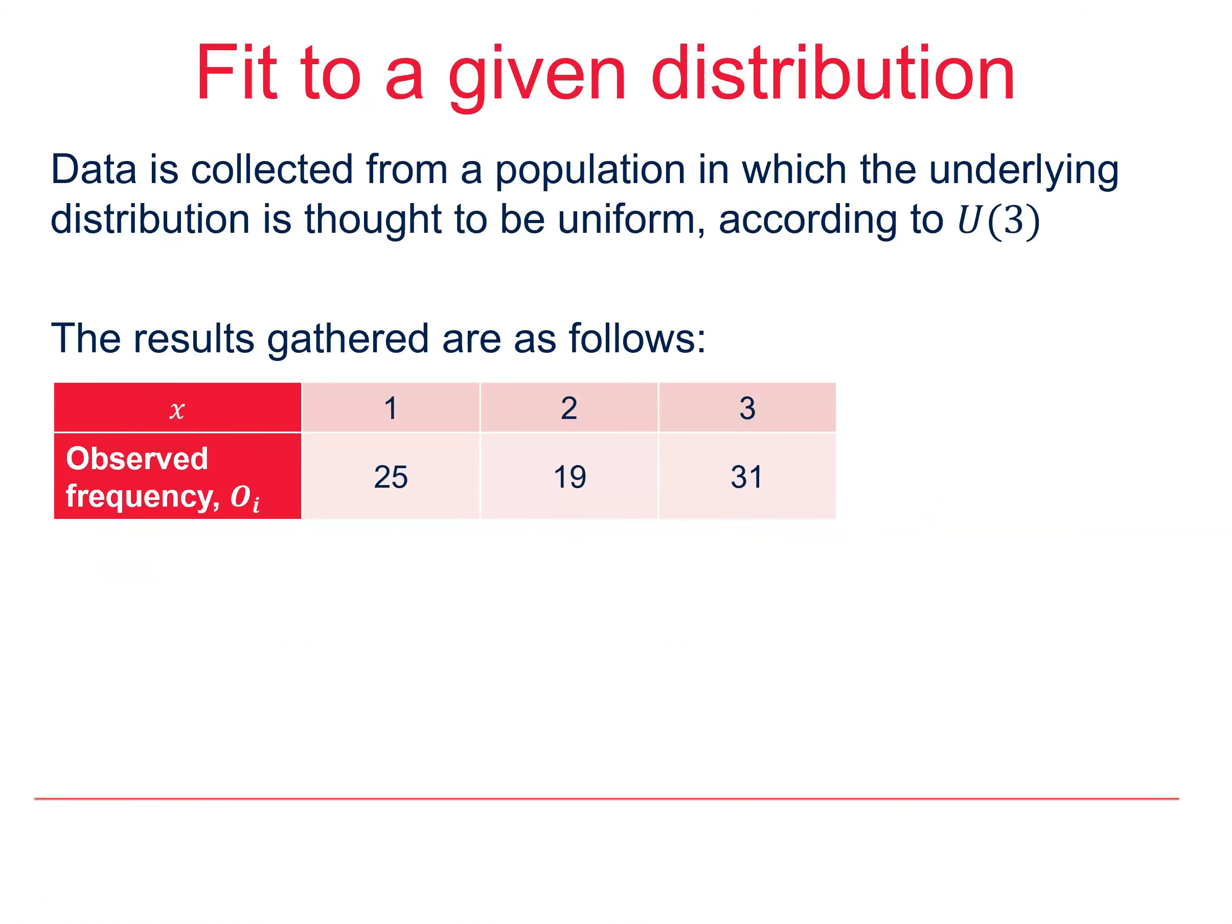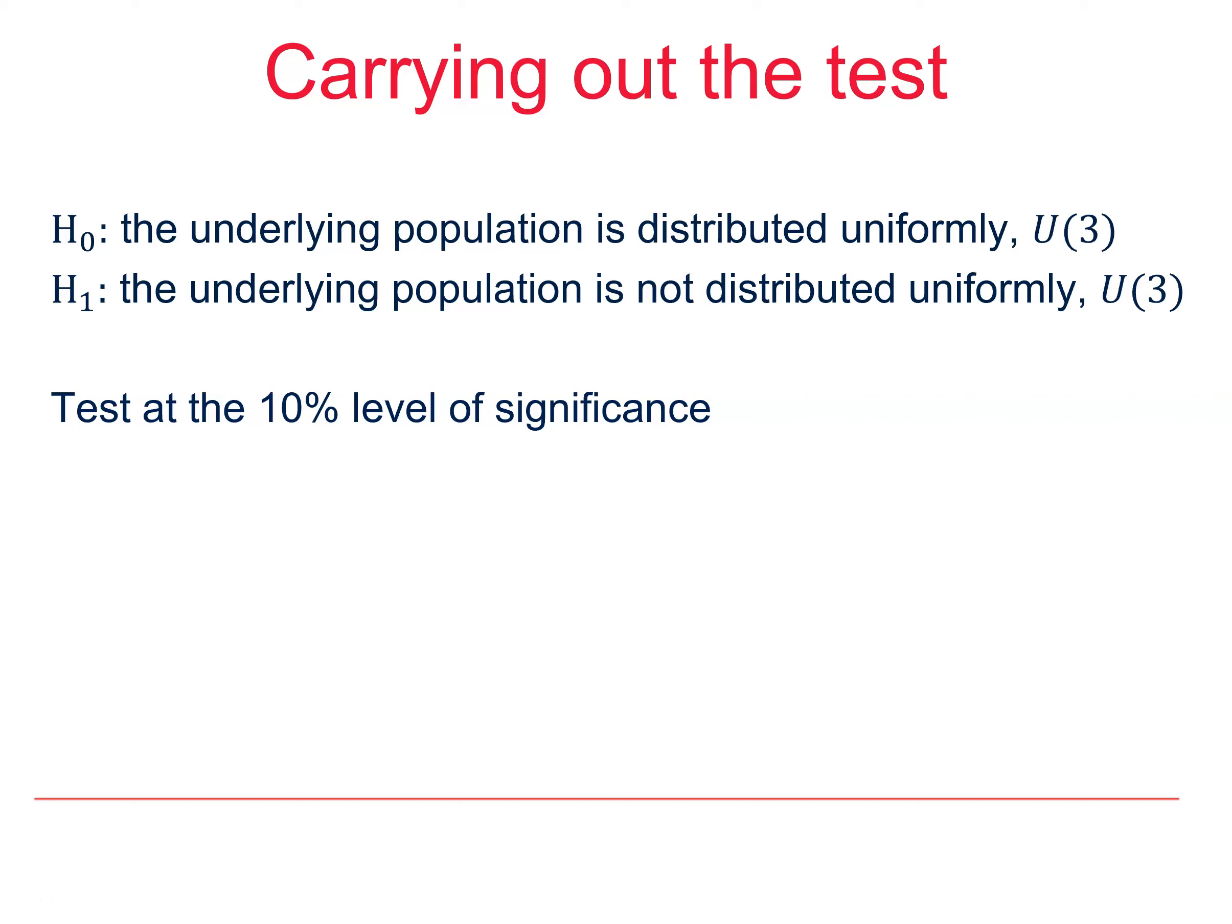This data is thought to come from a population with a uniform distribution. As usual, we're going to start by stating our null and alternative hypotheses. This time, we're going to test at the 10% level.